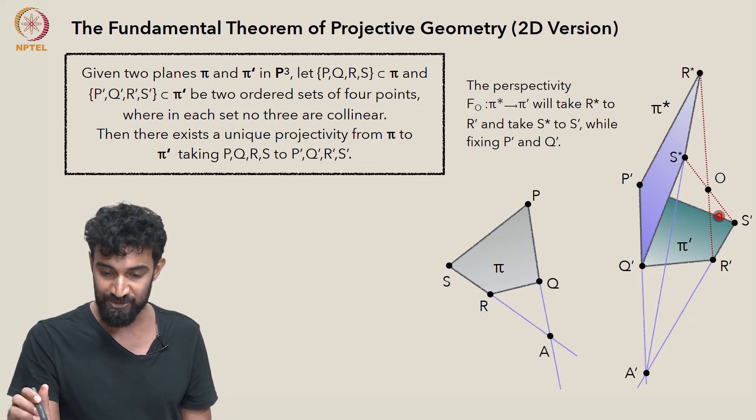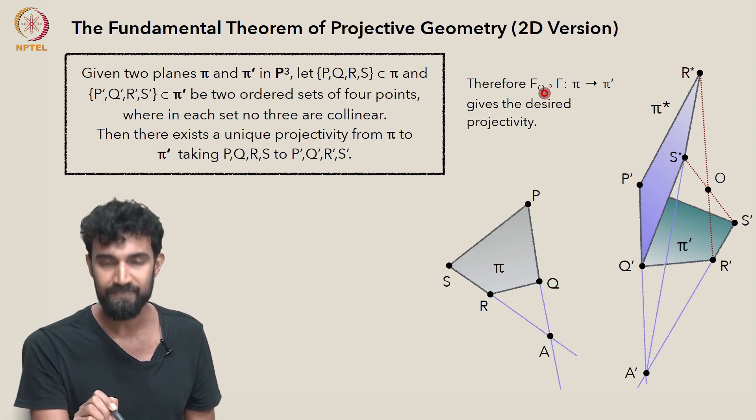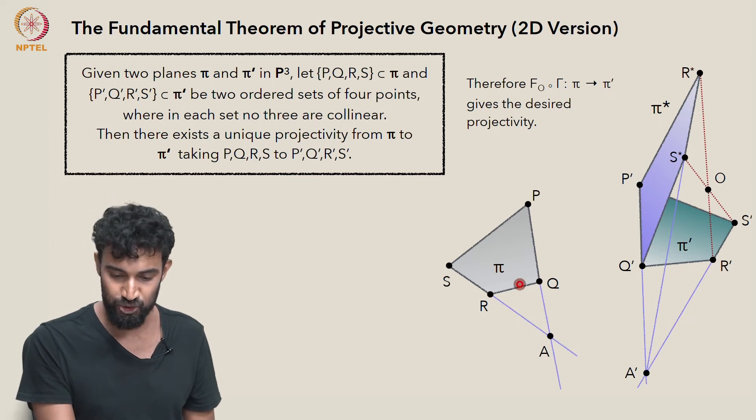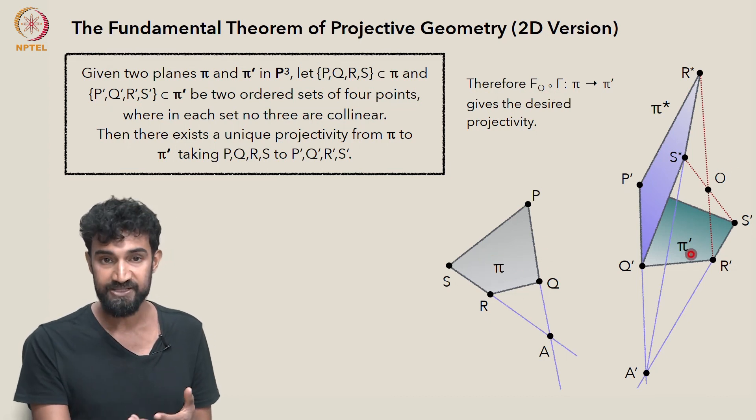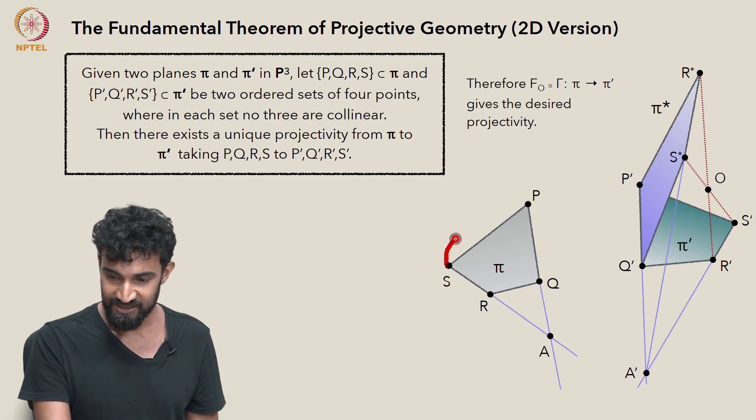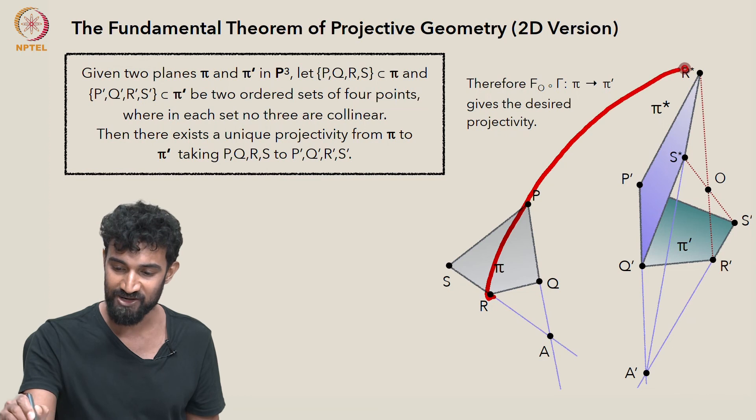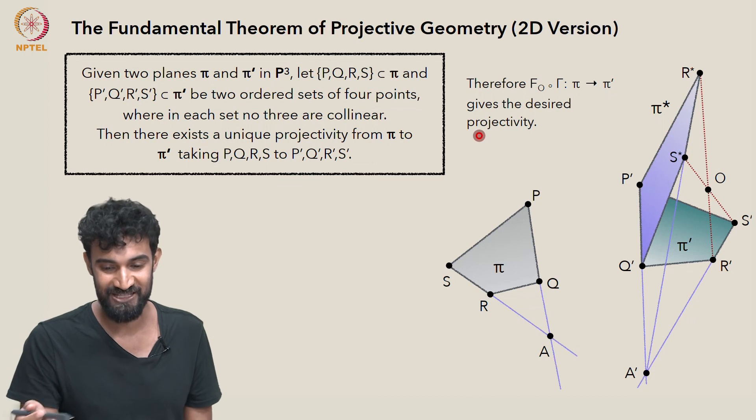And what happens when we compose it with our map gamma? Remember our map gamma took π to π star. So if we do gamma and follow it with this F_O, we end up with a map from π to π prime. And it does exactly what we want. It's going to take P to P prime, Q to Q prime, S via S star to S prime, and R via R star to R prime.